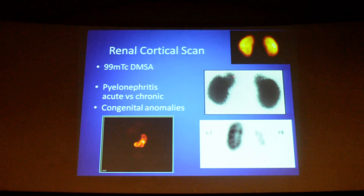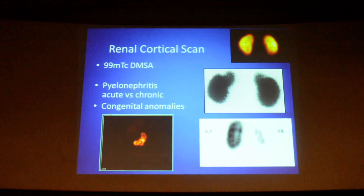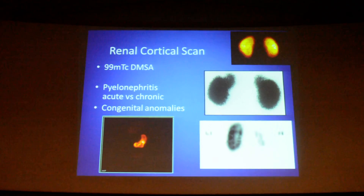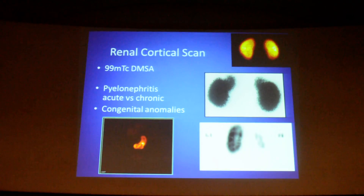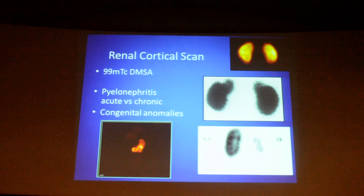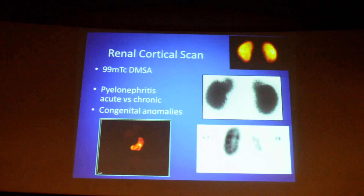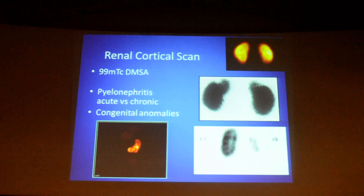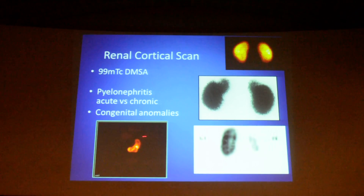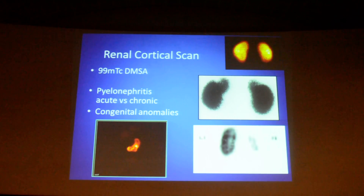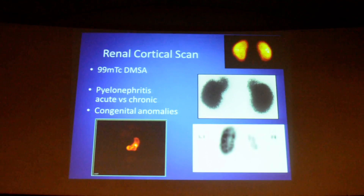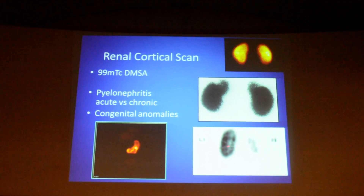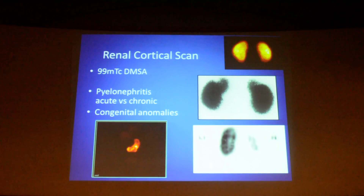How do you differentiate? In a normal volume kidney, if there is a defect on one scan you cannot say whether it is a scar or an acute pyelonephritic focus. If a subsequent scan done after 3 months of antibiotic therapy shows the defect has disappeared, then it is an acute focus.